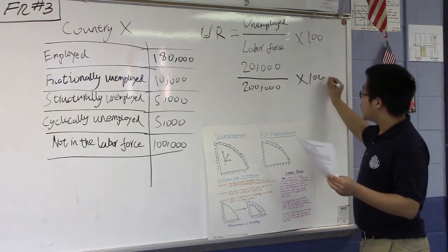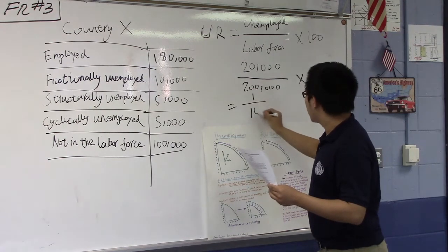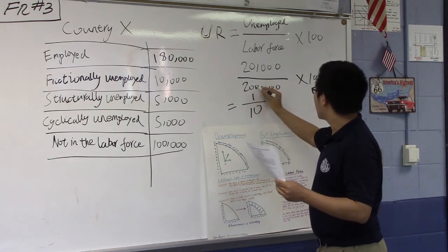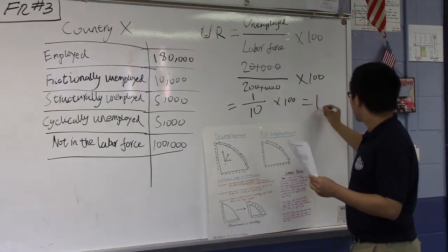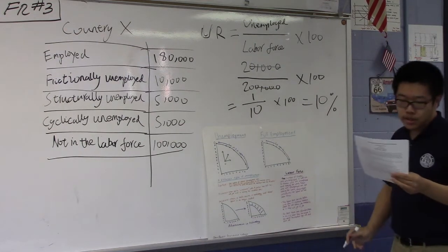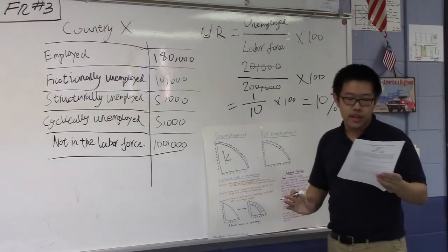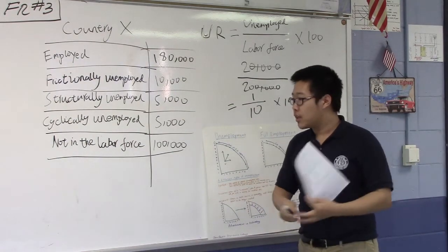20,000 times 100, here we go, 1 over 10 times 100, which is 10%. So the answer of question B is the unemployment rate in country X is 10%. Very well done, David.